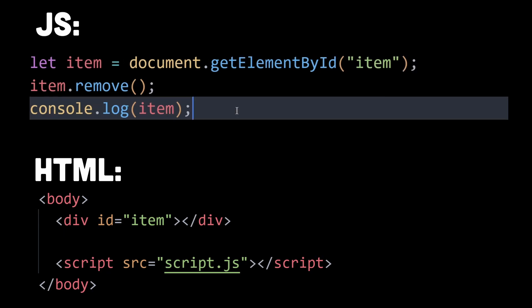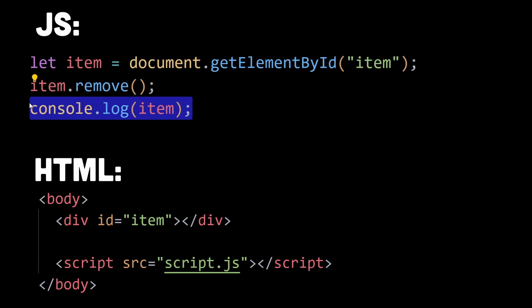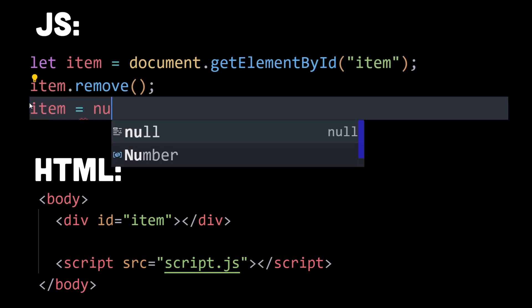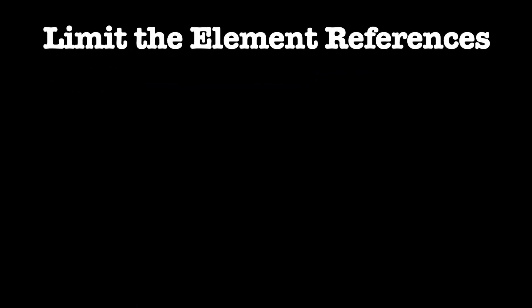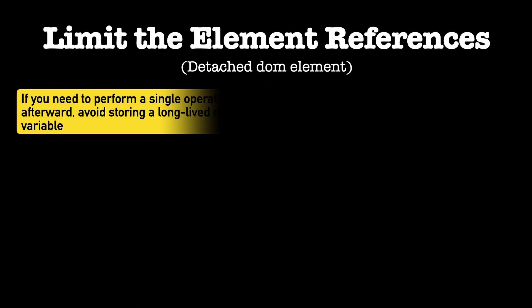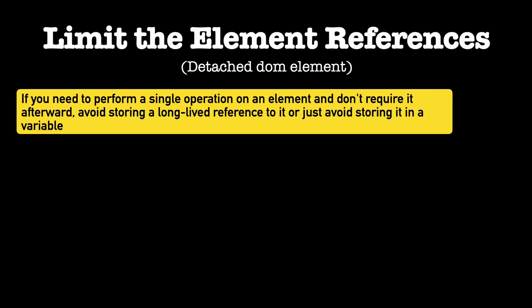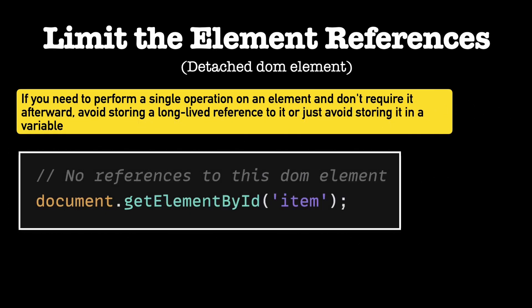To avoid memory leaks in such a situation, you can nullify references: after removing a DOM element from the document, set any references to that element to null. This breaks the reference between the JavaScript variable and the detached element, allowing the garbage collector to reclaim the memory. You can also limit element references — store references to DOM elements only when necessary. If you need to perform a single operation on an element and don't require it afterward, avoid storing a long-lived reference; instead, perform the operation directly on the element without storing it in a variable.